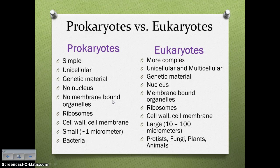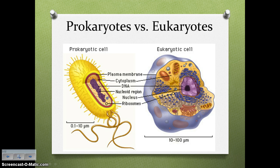Things I want to highlight: prokaryotes are more simple. They have no nucleus, no membrane-bound organelles. They are smaller. Eukaryotes are more complex. They have a nucleus, they have those membrane-bound organelles, and they are larger. Prokaryotes — we're talking about bacteria. Eukaryotes — we're talking about protists, fungi, plants, and animals. Those are the types of cells and the differences between them.